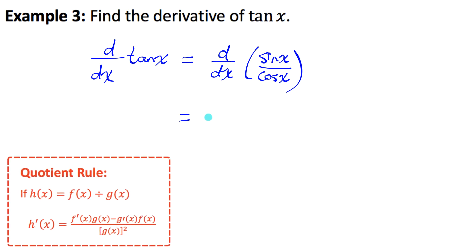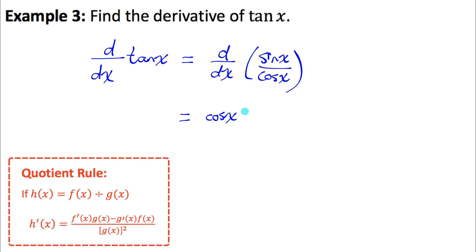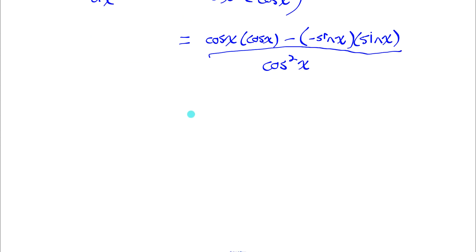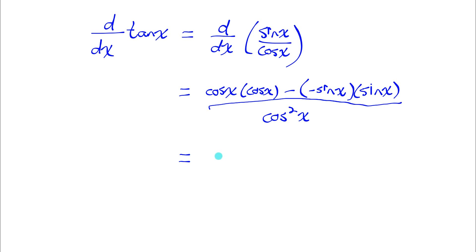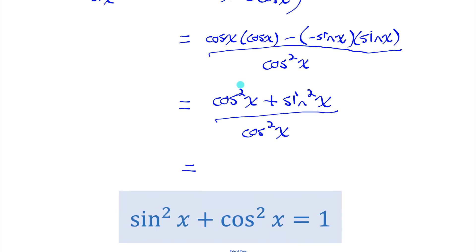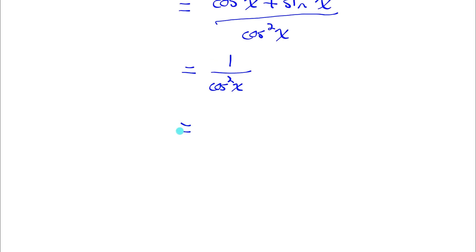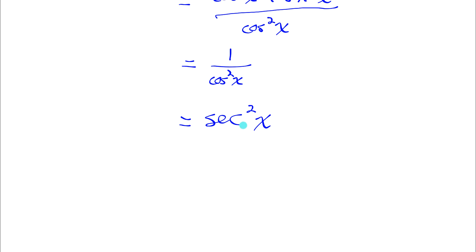Using the quotient rule: derivative of the numerator (cos x) times the denominator, minus derivative of the denominator (negative sine x) times the numerator, all over the denominator squared (cos squared x). Simplifying the numerator: cos x times cos x gives cos squared x, minus a negative gives plus sine squared x. By the Pythagorean identity, cos squared x plus sine squared x equals one, so we have one over cos squared x. Since the reciprocal of cosine is secant, this equals secant squared x. So the derivative of tan x is secant squared x.